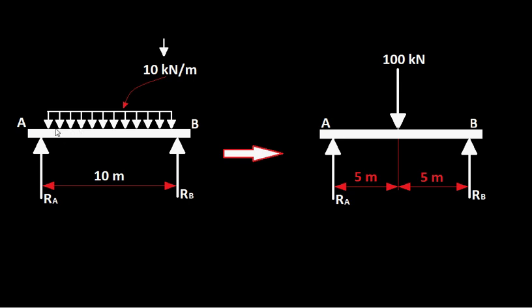Important clarification: the equivalent load acts at the mid span of the load, not necessarily the mid span of the beam. If the UDL only covers, say, 6 meters on the beam, the equivalent load acts at 3 meters from the start of that load. In our case, the load acts over the full 10 meters, so the equivalent 100 kilo Newton force acts at 5 meters from either end.